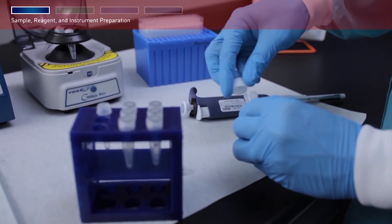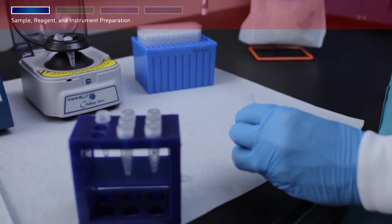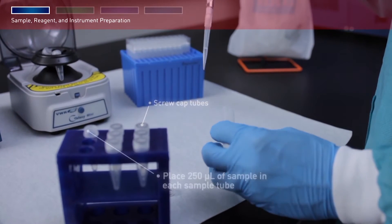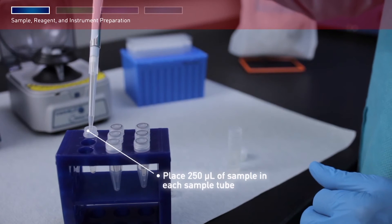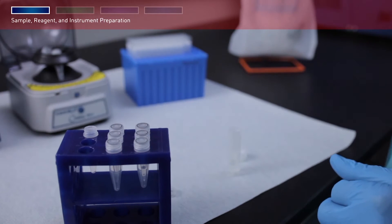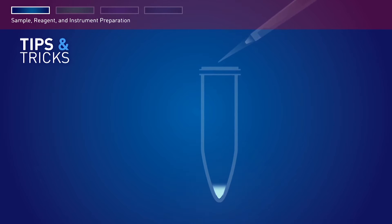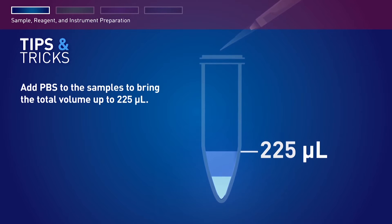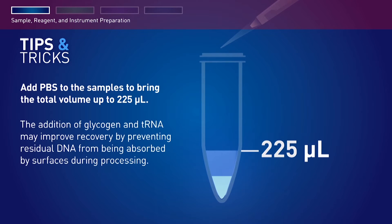After loading and inserting the cartridge rack and tip and tube rack, prepare samples in triplicate using screw cap tubes. Place 250 microliters of sample in each sample tube, up to 13 sample tubes in total. For samples that are less than 225 microliters, add PBS to bring the total volume up to 225 microliters. In samples expected to have very low levels of DNA, the addition of glycogen and tRNA may improve recovery by preventing residual DNA from being absorbed by surfaces during processing.